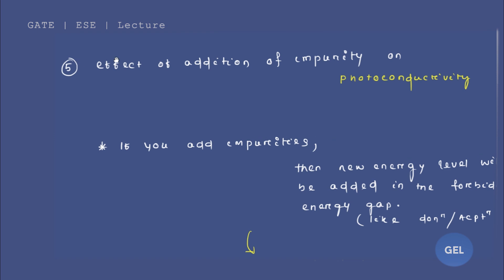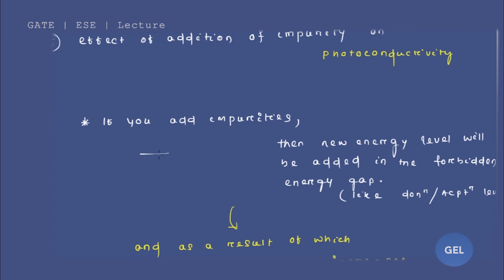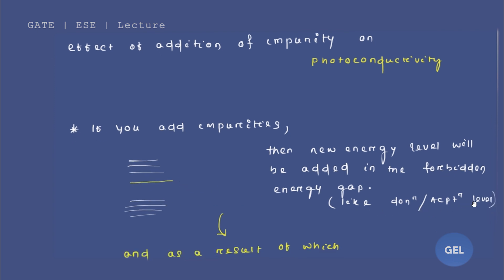The last point of discussion is the effect of addition of impurity on photo conductivity. If you add impurity to the semiconductor, a new energy level will be added inside the forbidden energy gap — either a donor energy level or an acceptor energy level. If you increase the impurity concentration in your semiconductor, this new energy level gets added inside the forbidden energy gap.